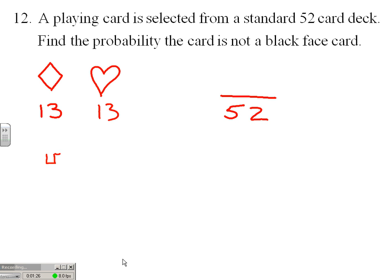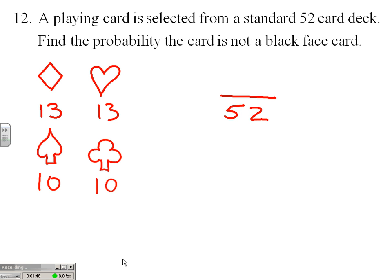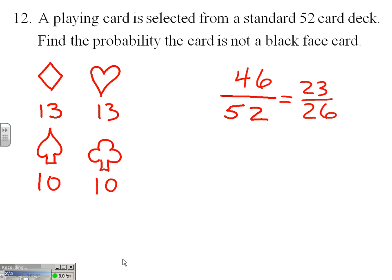Spades — we'd have winning cards from ace up through 10, so 10 winners there. We could win with 10 spades or 10 clubs non-face cards. We ended up taking 13 plus 13 plus 10 plus 10.